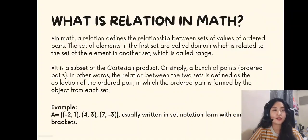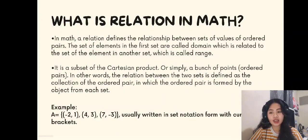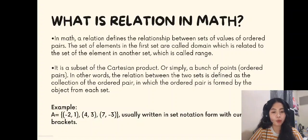What is relation in math? In math, a relation defines the relationship between sets of values of ordered pairs. The set of elements in the first set are called domain, which is related to the set of elements in another set, which is called range. It is a subset of the Cartesian product, or simply a bunch of points or ordered pairs.